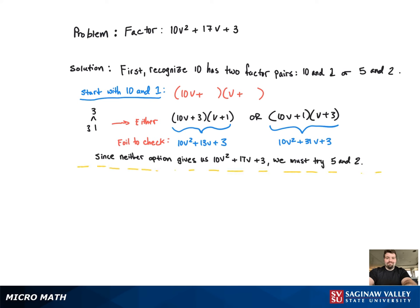So we're going to have to switch over to 5 and 2. Since 3 only had one factor pair and neither of those worked, we're going to see if 5 and 2 will work. Now we're going to start with 5v and 2v.